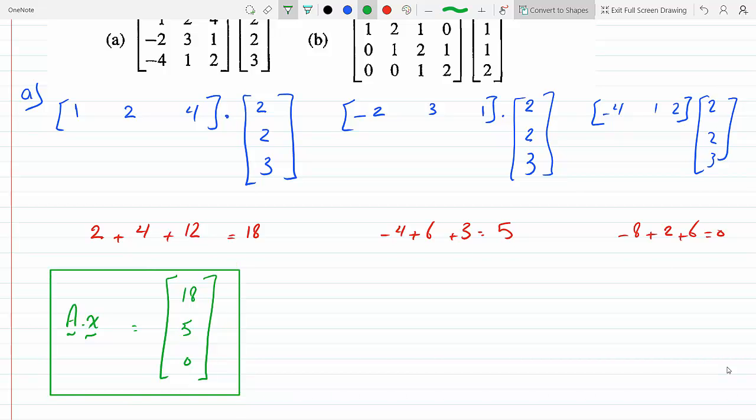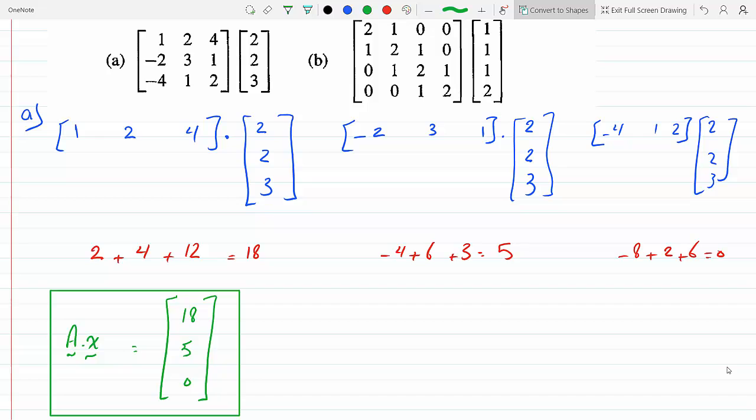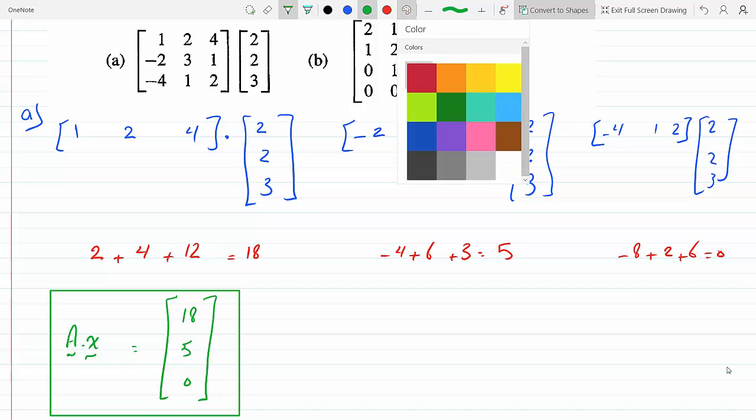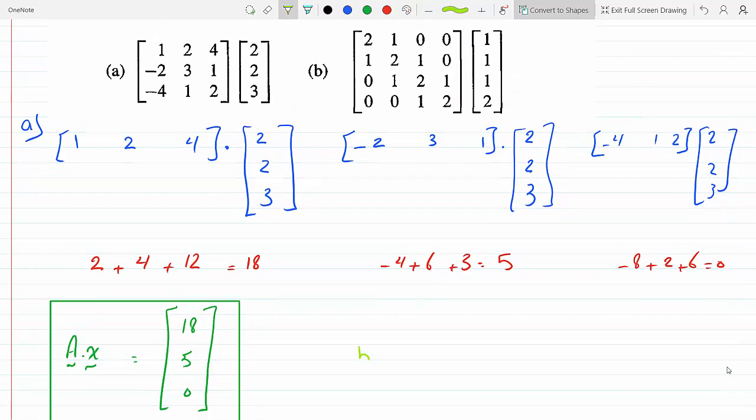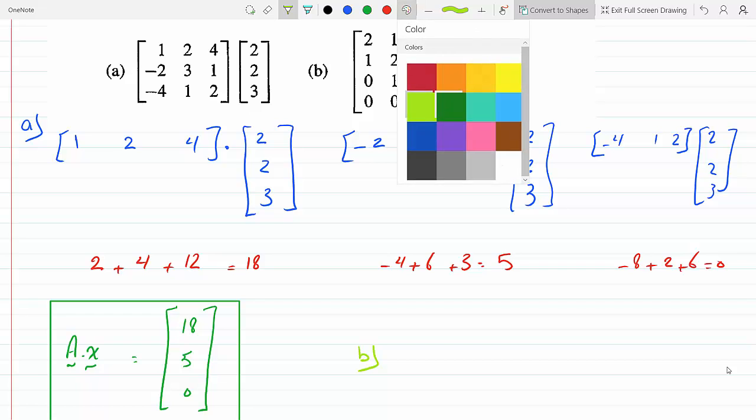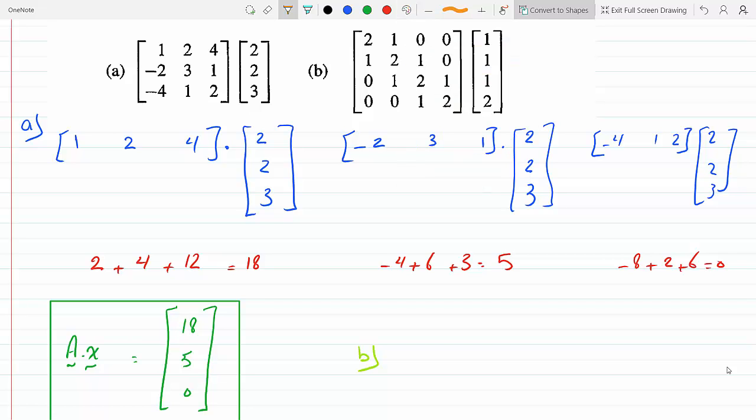And if I do the same thing for part B, let me just do it quickly because now that you get the point, this is a straightforward question. So for part B, we change the color here. So we will get 2 times 1 is 2, 2 plus 1 is 3, and the rest are 0s. So 3.